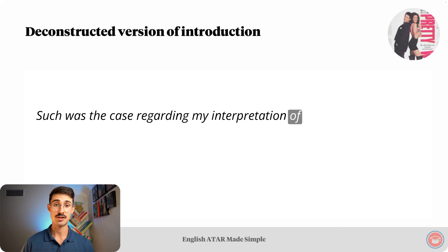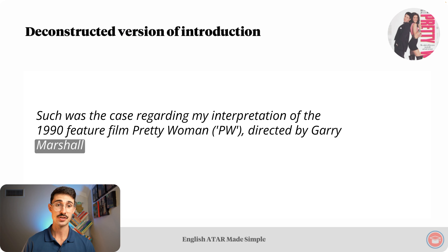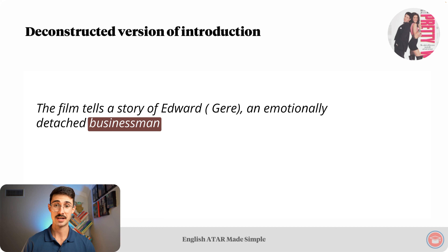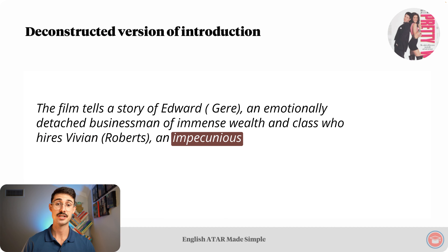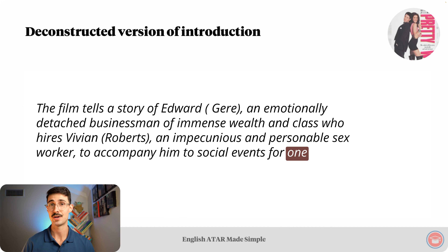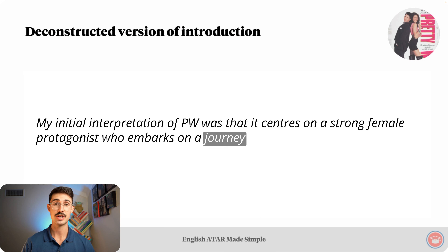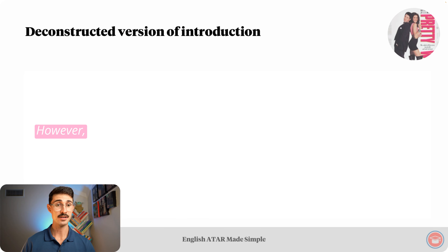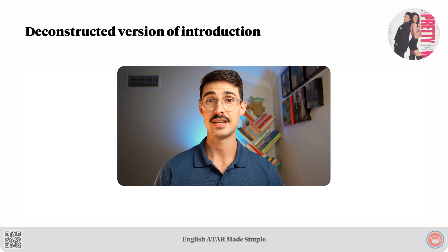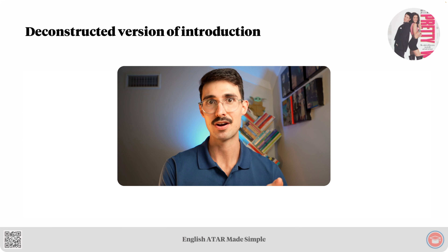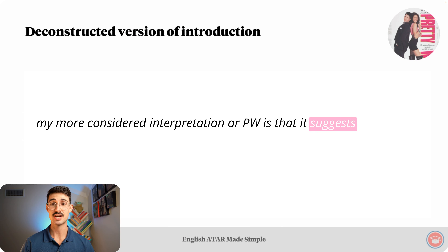Such was the case regarding my interpretation of the 1990 feature film Pretty Woman, directed by Gary Marshall and starring Richard Gere and Julia Roberts. Here's the plot synopsis: the film tells the story of Edward, an emotionally detached businessman of immense wealth and class who hires Vivian Roberts, an impecunious and personable sex worker, to accompany him to social events for one week. This is the terminology element: my initial interpretation of PW was that it centres on a strong female protagonist who embarks on a journey of self-empowerment. Here is the first part of the thesis: however, after reflecting on a feminist reading of the text — and in the middle of this thesis statement I incorporate the body paragraphs element — the relevance of context, generic conventions and technical construction. My more considered interpretation of PW is that it suggests women need wealthy men to transform themselves.